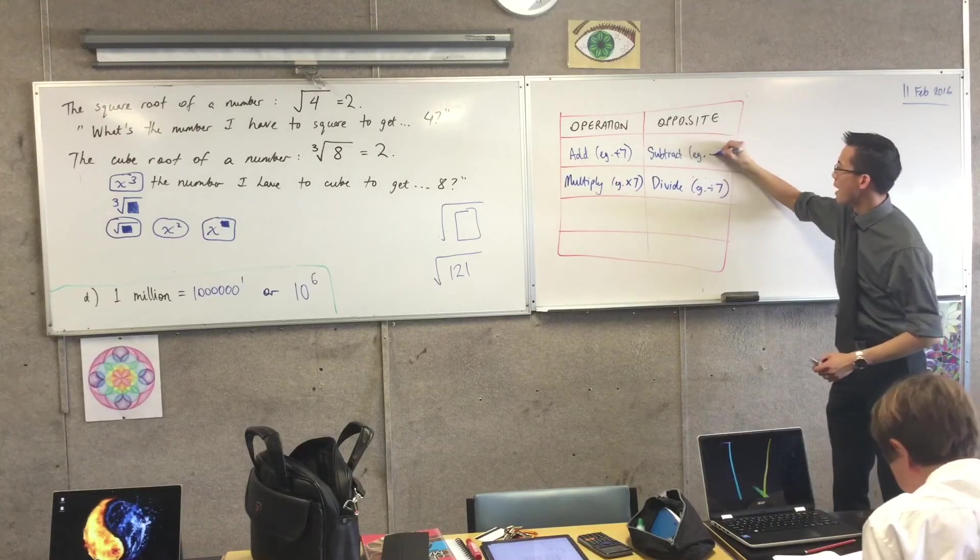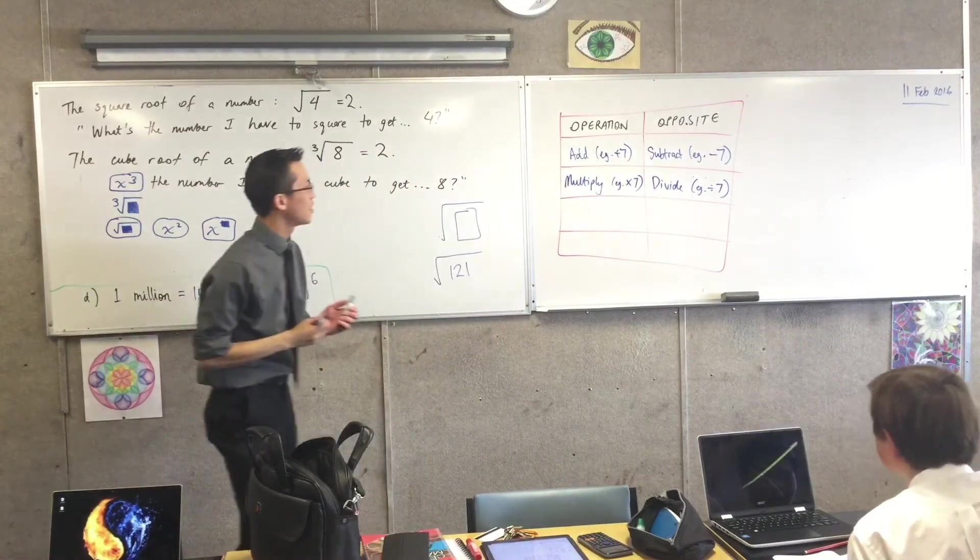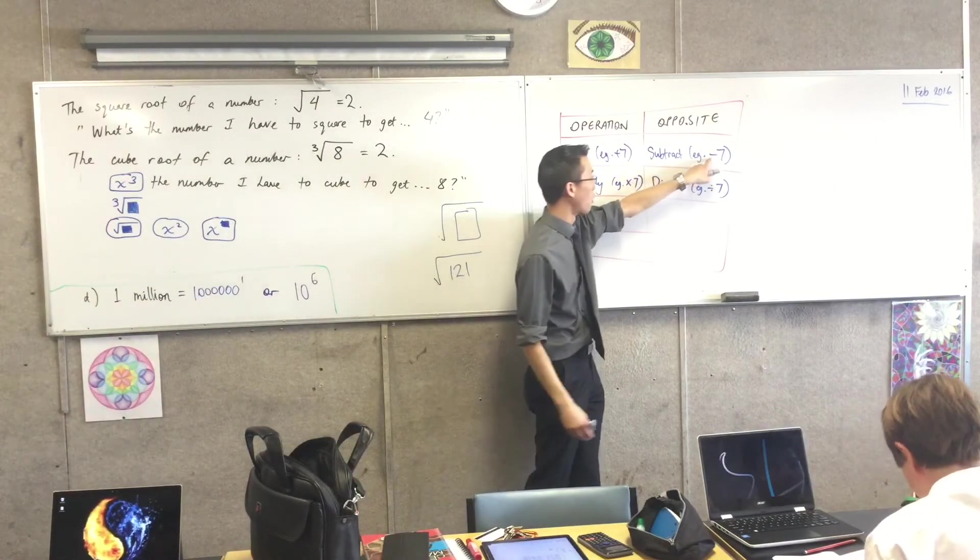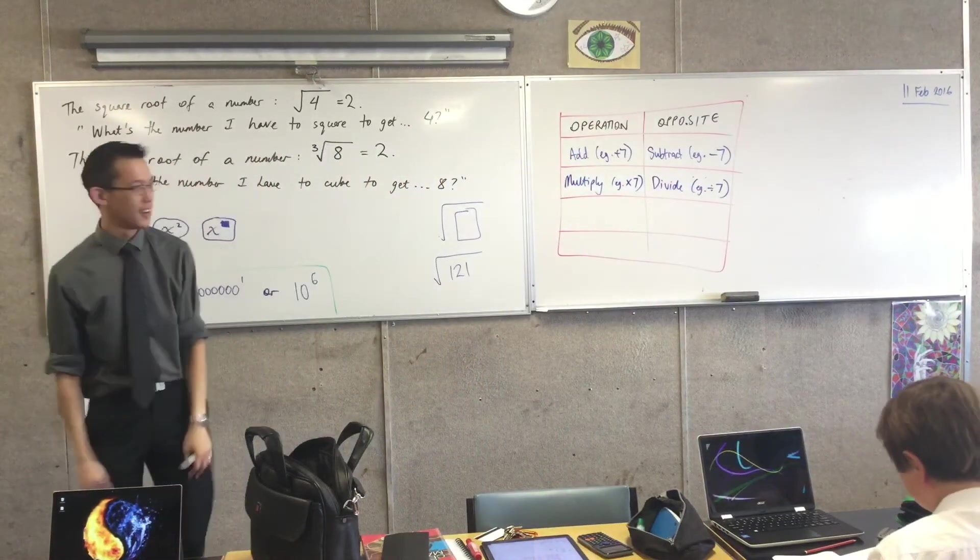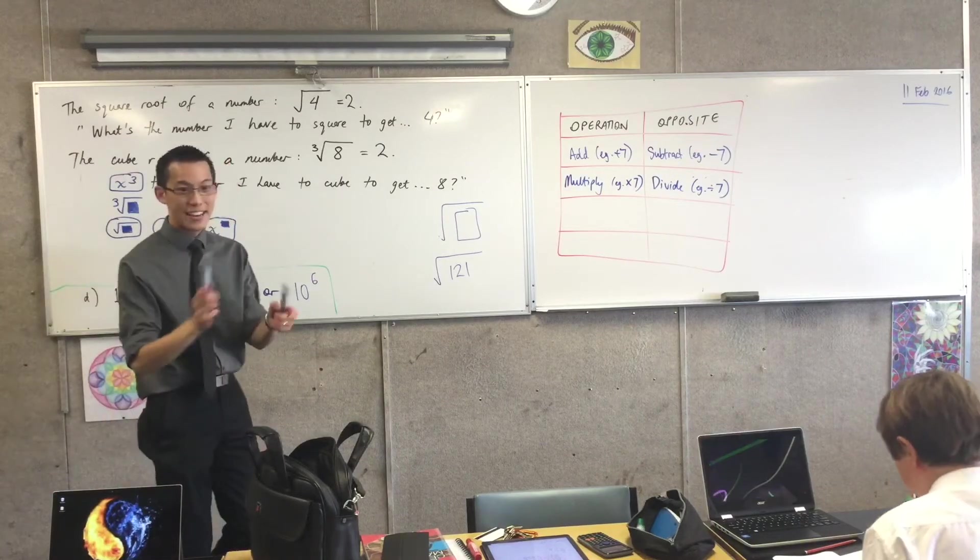By the way, just as a little minor thing. Minus is actually not this thing here. It's not a verb. It's an object there. So, you should say, I'm going to subtract seven rather than minus seven. Minus is kind of the name of the symbol. Anyway, that's a minor point.